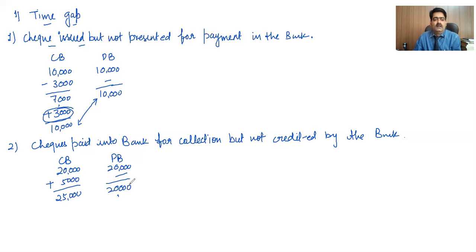But that check is not credited by the bank, due to the process of collection, because that check is in the process of collection. And that is why it is not credited by the bank. So passbook balance is rupees 20,000. And by this, we can see difference is arising.